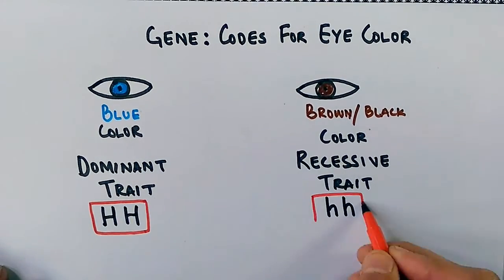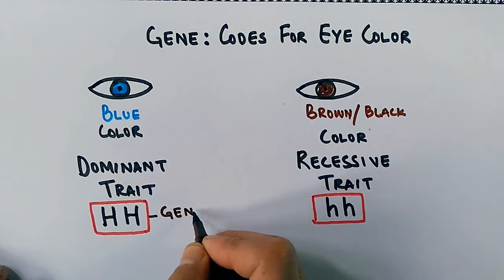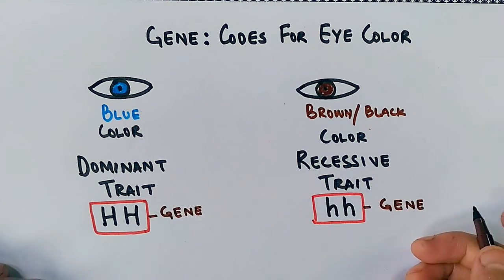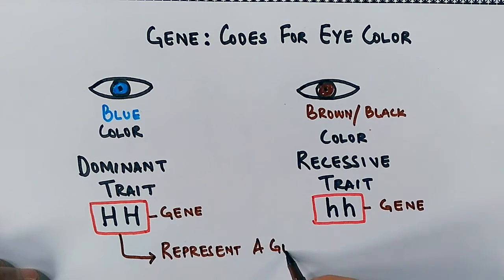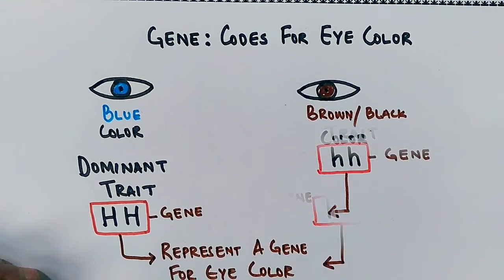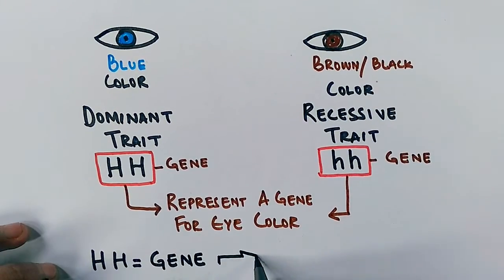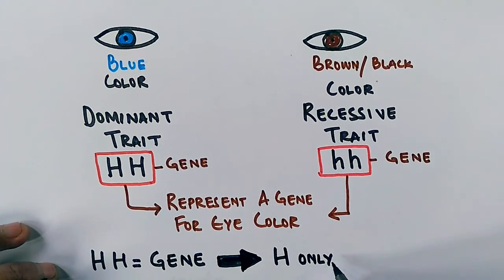And on the other side we have a recessive trait. It has a lowercase h and it represents a gene for eye color. And this HH represents gene, but the only single individual H represents an allele here. This is how we can understand what allele is.